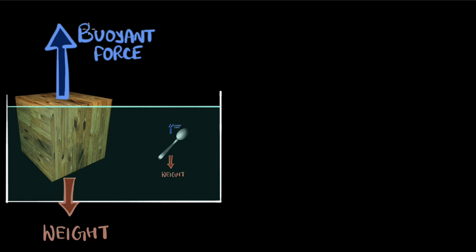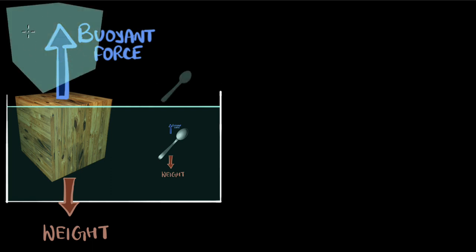But why does the box have such a huge buoyant force while the spoon has a much smaller one? For that we can look at Archimedes' principle, which says that the buoyant force equals the weight of the fluid that it displaces. So if I submerge the entire box in water, it displaces this much fluid, and the weight of that displaced fluid is bigger than the weight of the box — therefore the buoyant force is bigger than the weight of the box. Whereas for the spoon, the weight of the displaced fluid is much smaller, and therefore the buoyant force is smaller.